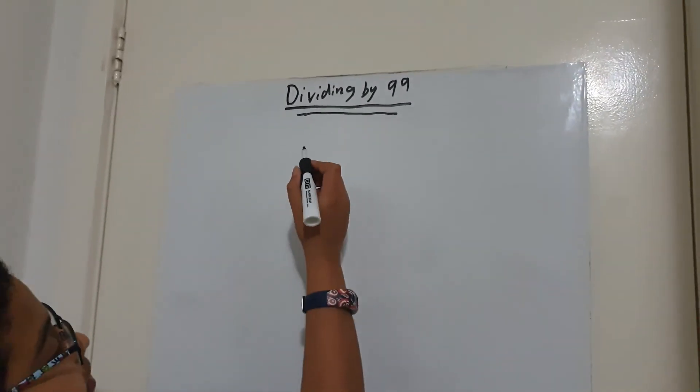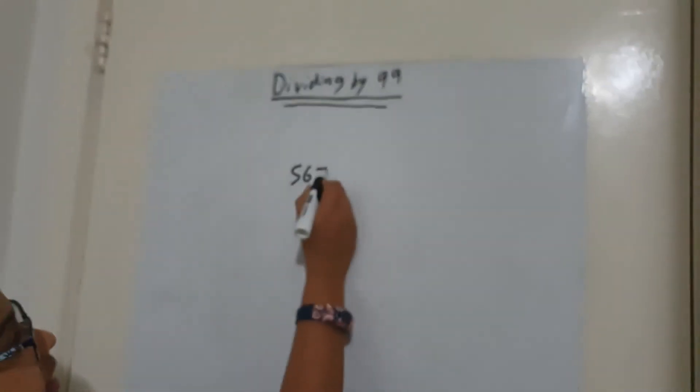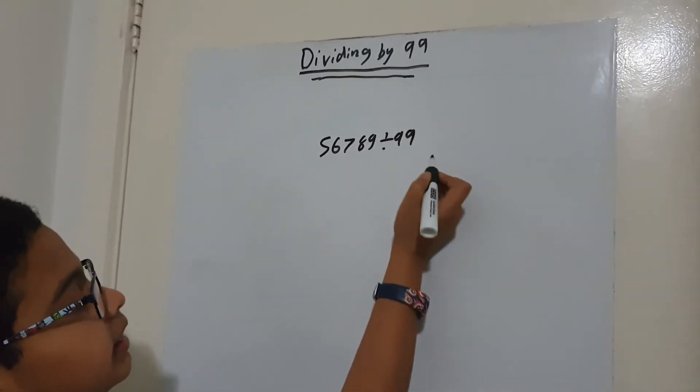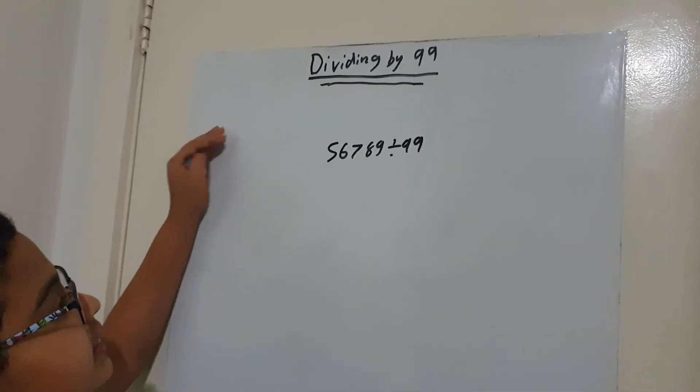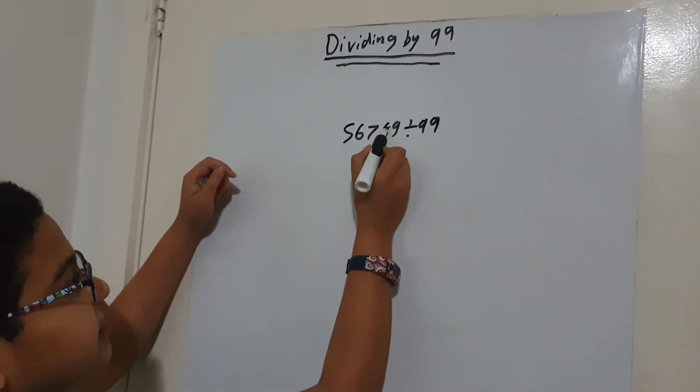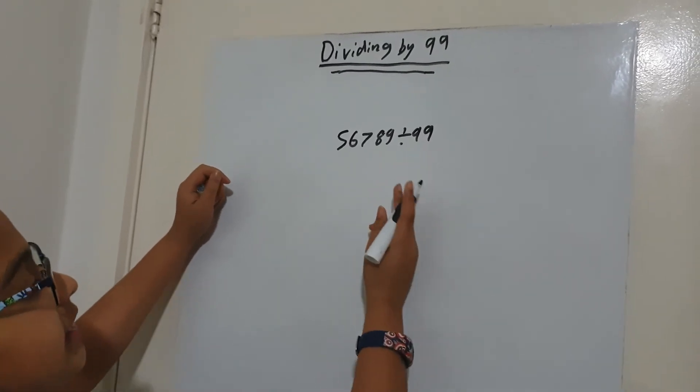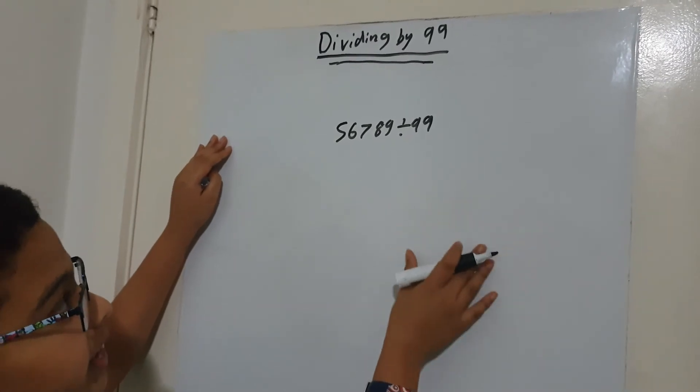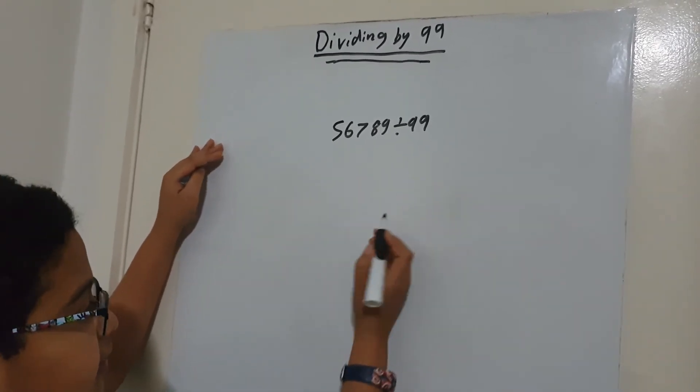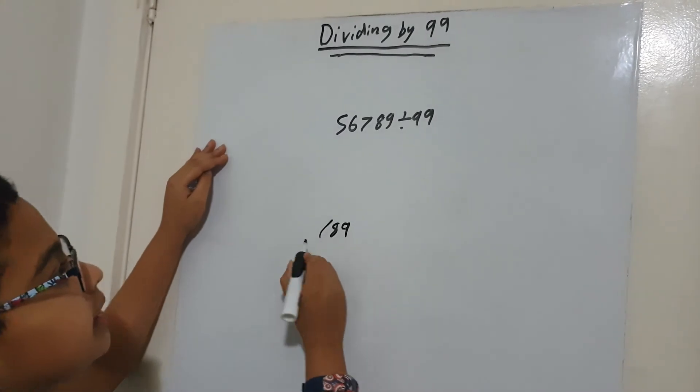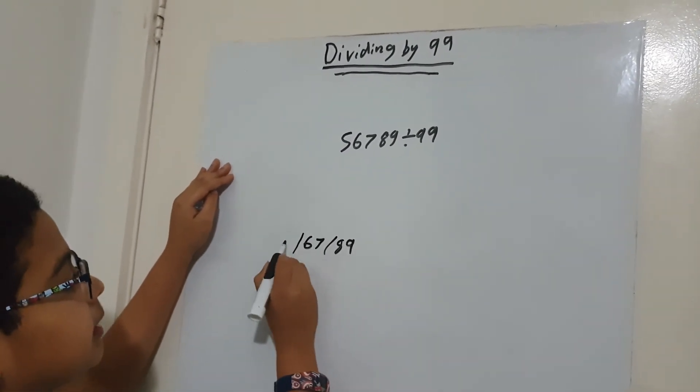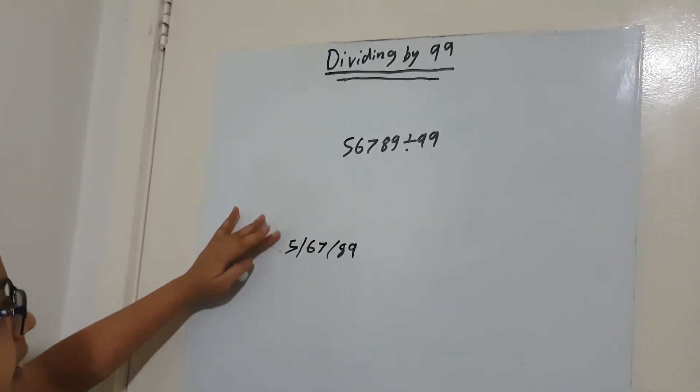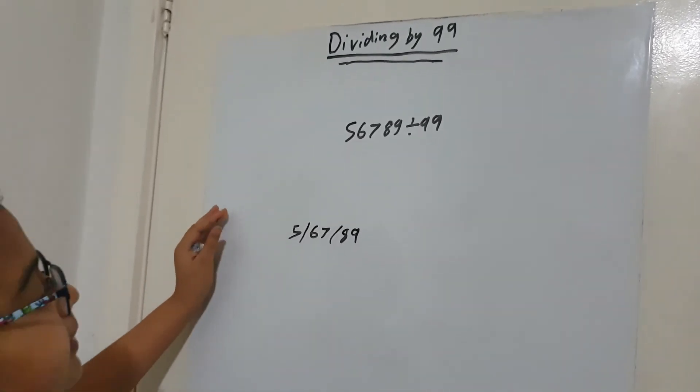All right. So, this time I'm going to do 56789. So, it's five digit number divided by 99. And I'm going to move this to this quite quickly so that you won't feel bored. So, we're going to split this number into parts, starting from the right, going to the left, and they each have to have two digits. So, 89, that's one part, 67, one part, and this one is five. If you want to, you can add a zero, but it really doesn't matter because of the process.